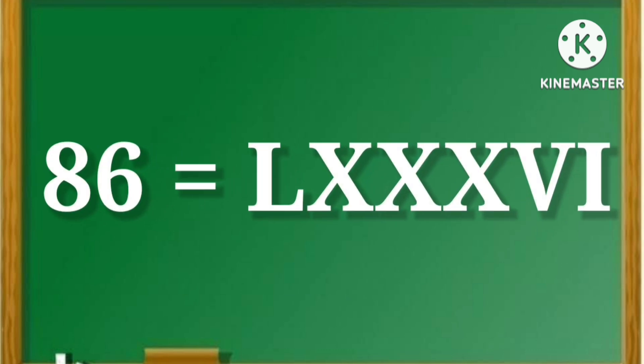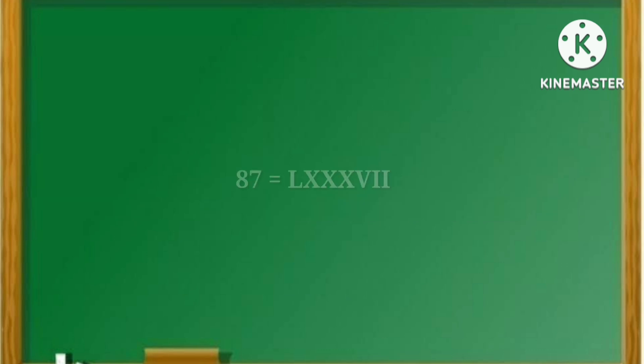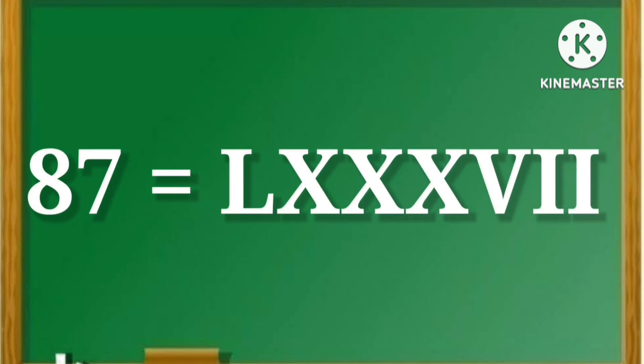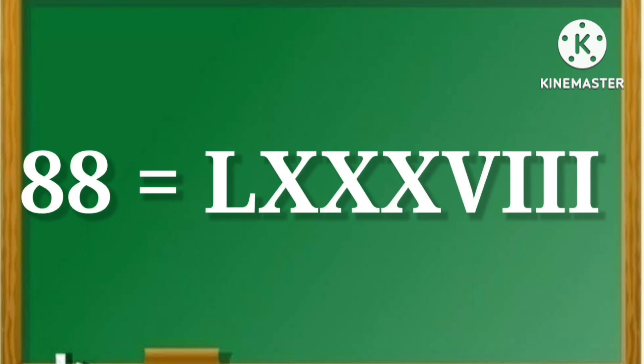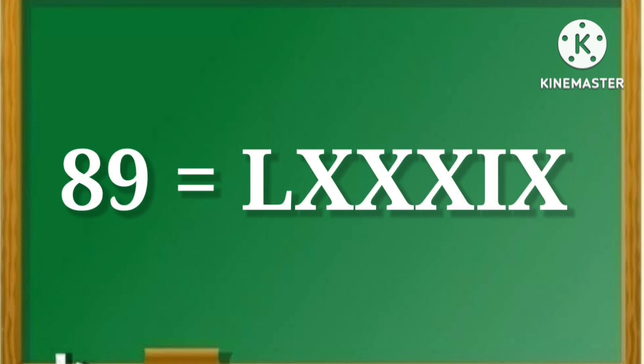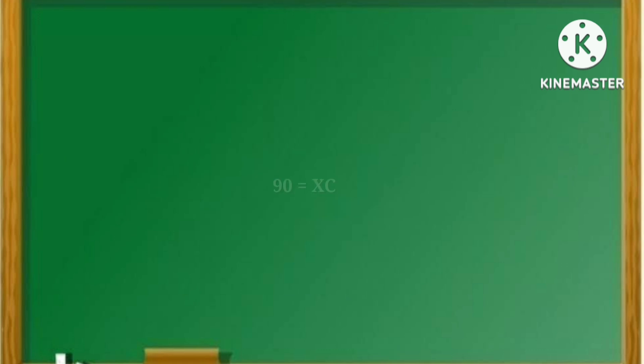86 is LXXXVI. 87 is LXXXVII. 88 is LXXXVIII. 89 is LXXXIX. 90 is XC.